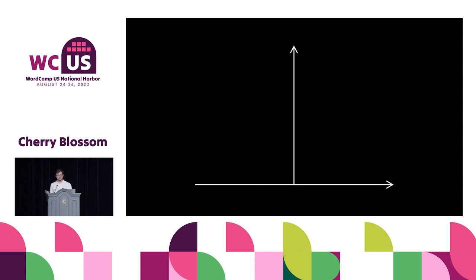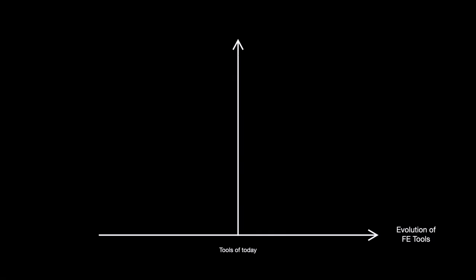I want to illustrate it with this simple graph. On the x-axis, we have the evolution of front-end tools — that's not time, that's a very important distinction. Evolution of front-end tools, where at zero we have tools of today, on the right we have tools of the future, and on the left we have tools of the past. On the y-axis, we have challenges associated with working with tools of those moments in time. So the common pattern goes something like this.